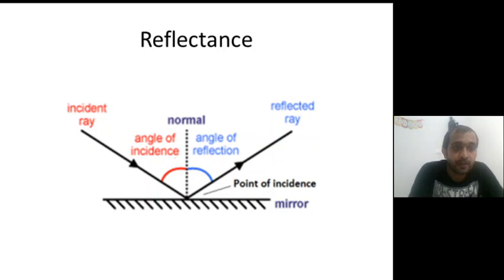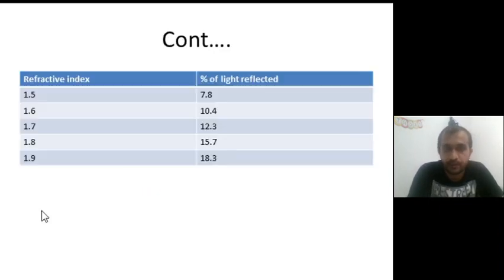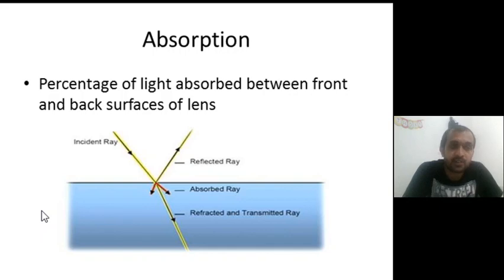This is how reflection works: the incident ray hits the surface, and the reflected ray is reflected from the normal surface at the angle of reflection equal to the angle of incidence. The remaining light is either passed through or absorbed. Absorption is the percentage of light absorbed between the front and back surface of lenses — incident rays are both absorbed and reflected, with some amount also reflected.